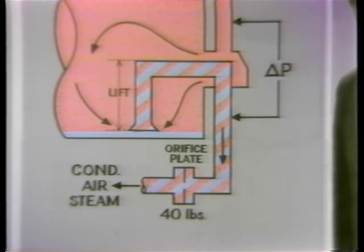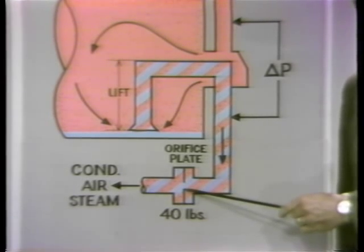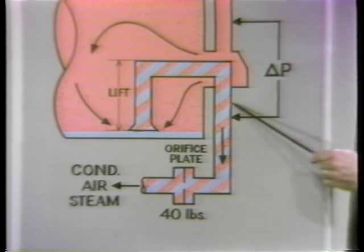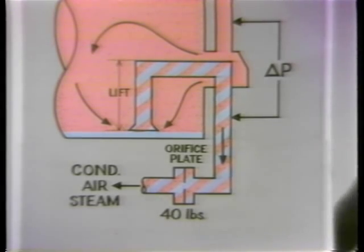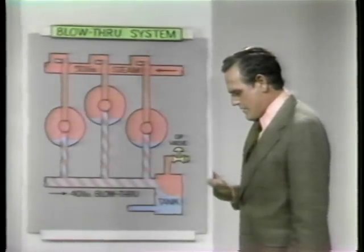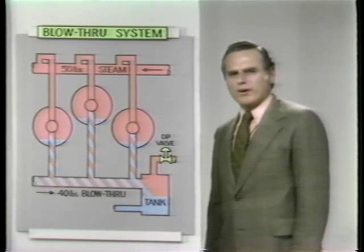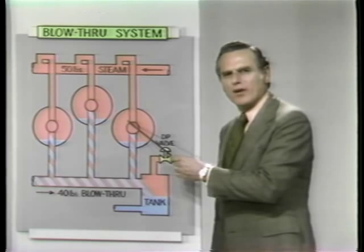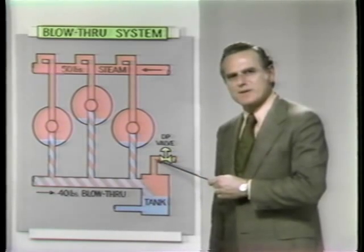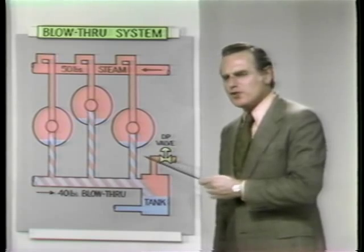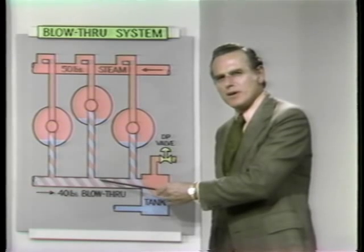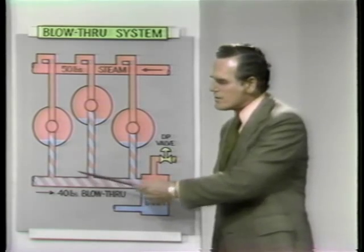To minimize this loss, back pressure control devices, such as orifice plates or differential pressure valves, must be used, resulting in low pressure differentials across the dryer roll. In a rotary dryer machine, a number of dryer rolls are all tied in together under the same back pressure control device. Thus, the differential pressure, or force available for removing condensate and air through the siphon pickup, is fixed and equal across all the dryers.